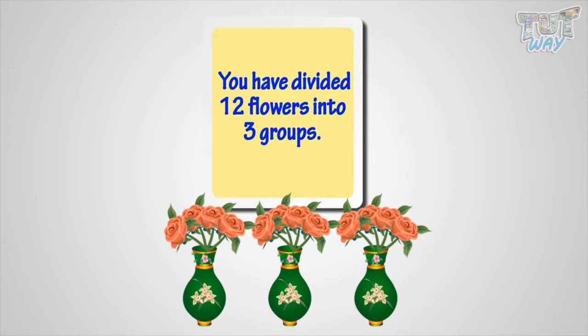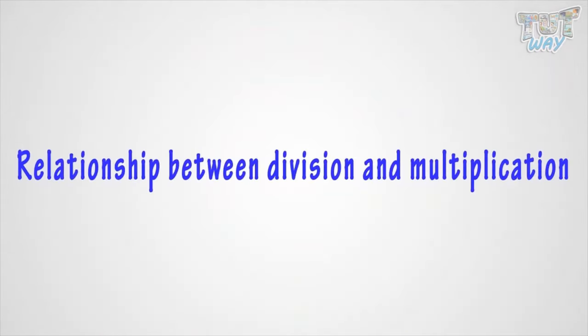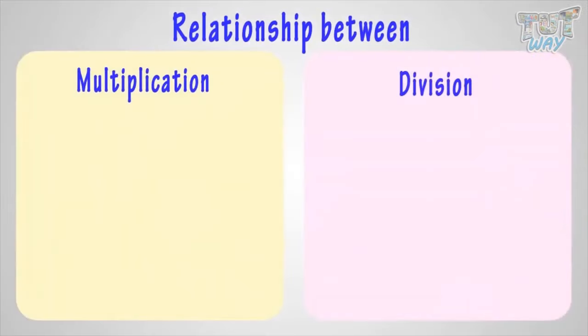Yay! You have divided twelve flowers into three groups. Now you know what's dividing. Now we will learn what's the relationship between multiplication and division. Do you know division is opposite of multiplication?